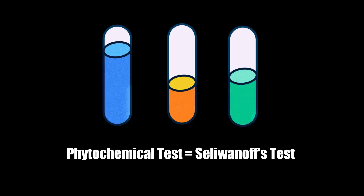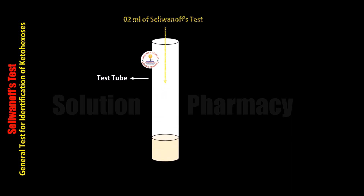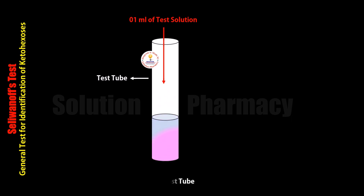Hello friends, welcome to the channel Solution. Today in this video we will tell you about Selivanov's test — what is Selivanov's test — and also demonstrate how this test is performed through animation, along with its principle. Selivanov's test is the specific identification test for keto sugars. We will explain it in more detail at the end of this video. So now let's see how Selivanov's test is performed.